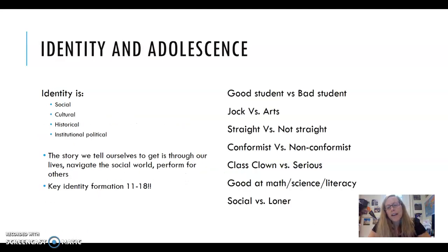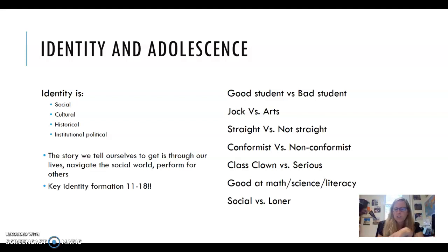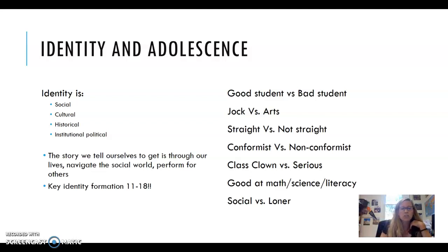Identity is really important in adolescence because key identity formation times are between the ages of 11 and 18. That might seem very obvious to you, but identity is more than just those stable characteristics. Identity is social, it's cultural, it's historical, it's institutional, it could be political. It's basically that story that we tell ourselves to help us get through our lives, navigate the world, perform for others.